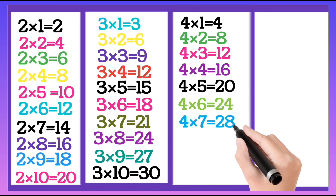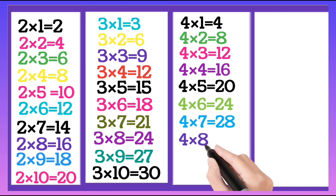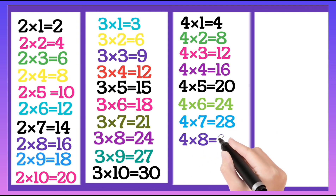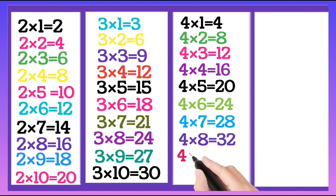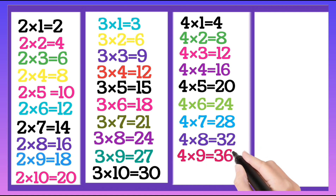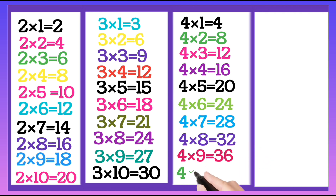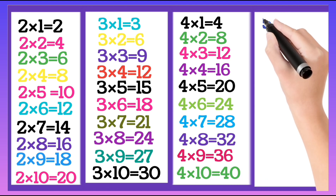Four 7's are 28, four 8's are 32, four 9's are 36, four 10's are 40.